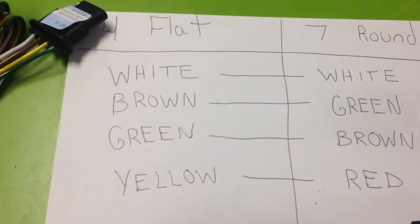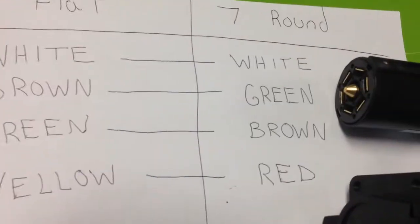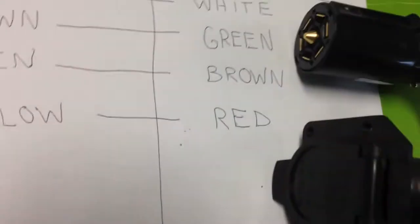White goes to white, brown actually goes to green, green goes to brown, and yellow goes to red.